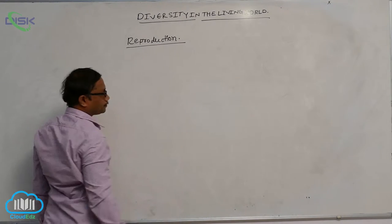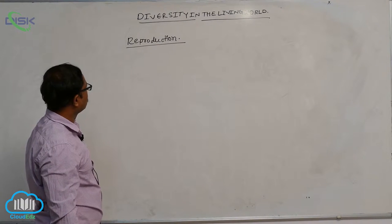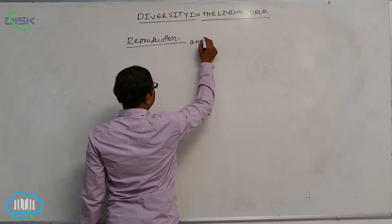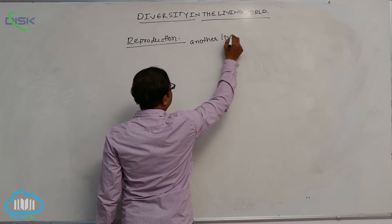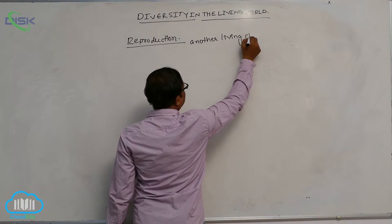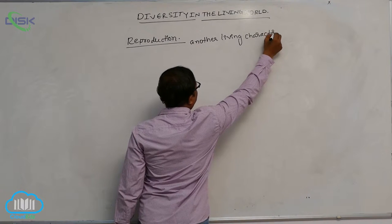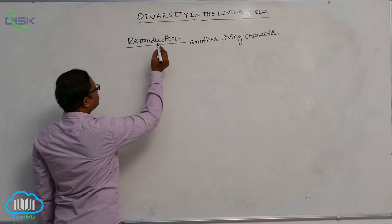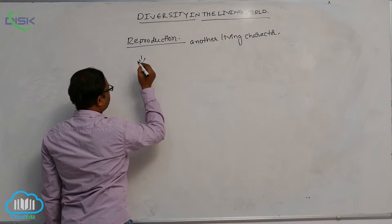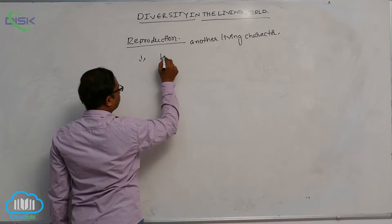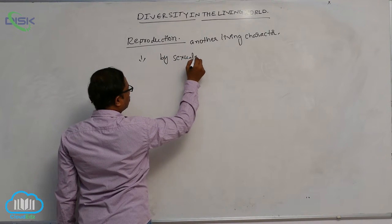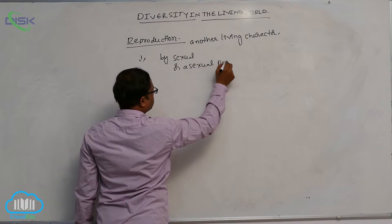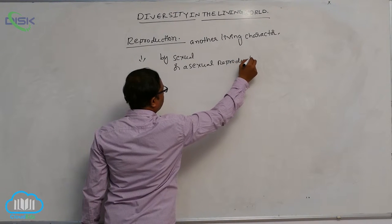Reproduction is another living character. Another living character is known as reproduction. All living organisms are able to reproduce by sexual or asexual reproduction.